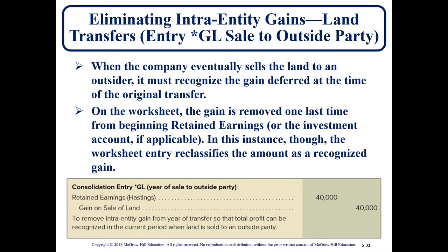If in a subsequent year the land is finally sold to an outside party, we are actually recognizing the gain now. We still have to do a debit to retained earnings to get rid of the seller's gain that keeps carrying over in their financial records, and then we finally record the gain in the year that the land was sold to an outsider.